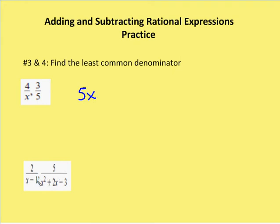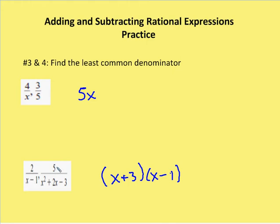For the second problem, what I need to do first is to factor the quadratic in the denominator of the second term. I can see that the second term's denominator can be factored to (x plus 3) times (x minus 1). I have an x minus 1 in the denominator of the first term. So I can create a common denominator by multiplying the numerator and denominator by (x plus 3). I don't have to change any values of the second fraction because it already includes (x plus 3) and (x minus 1). So my common denominator is (x plus 3) times (x minus 1) in number 4.